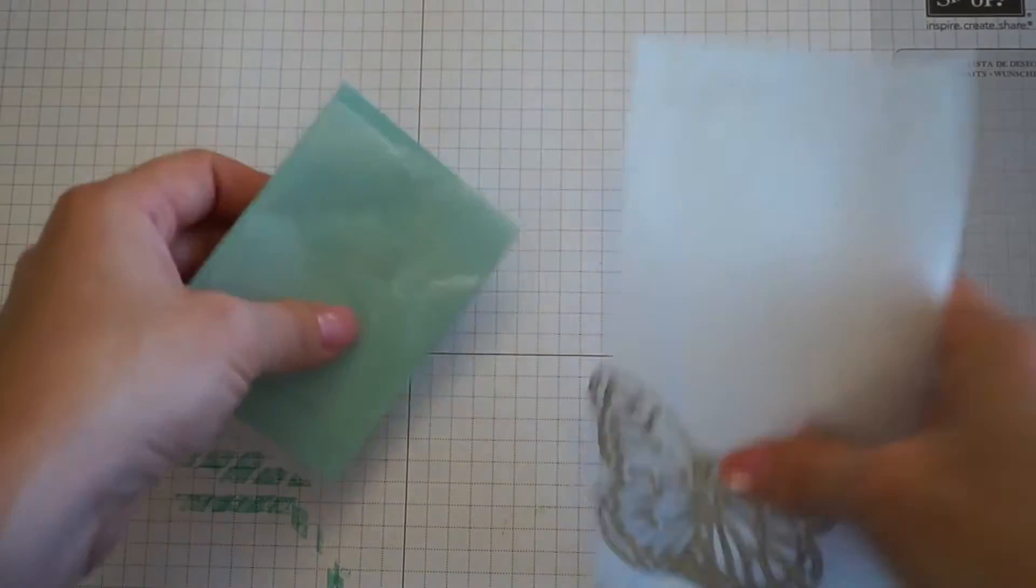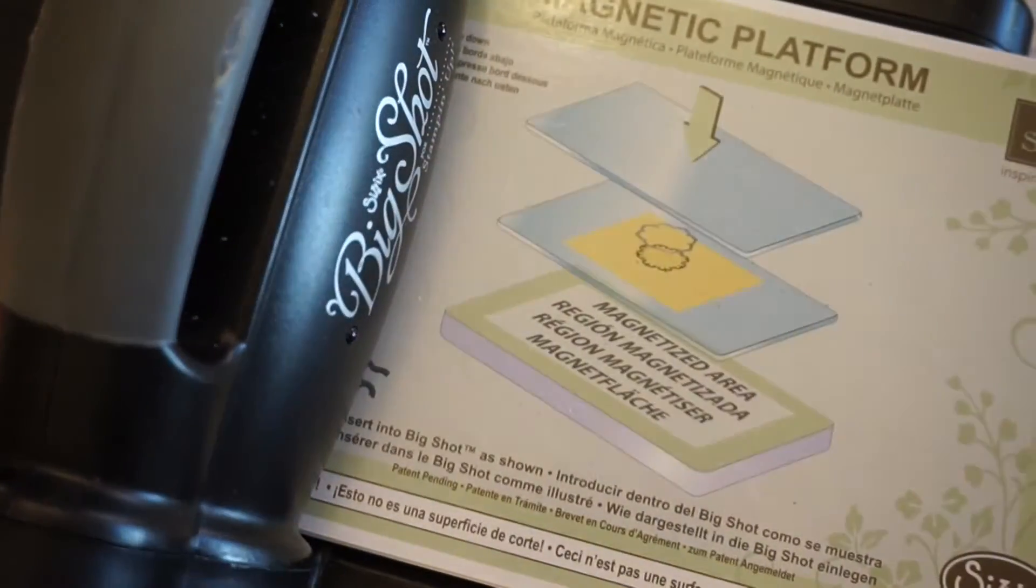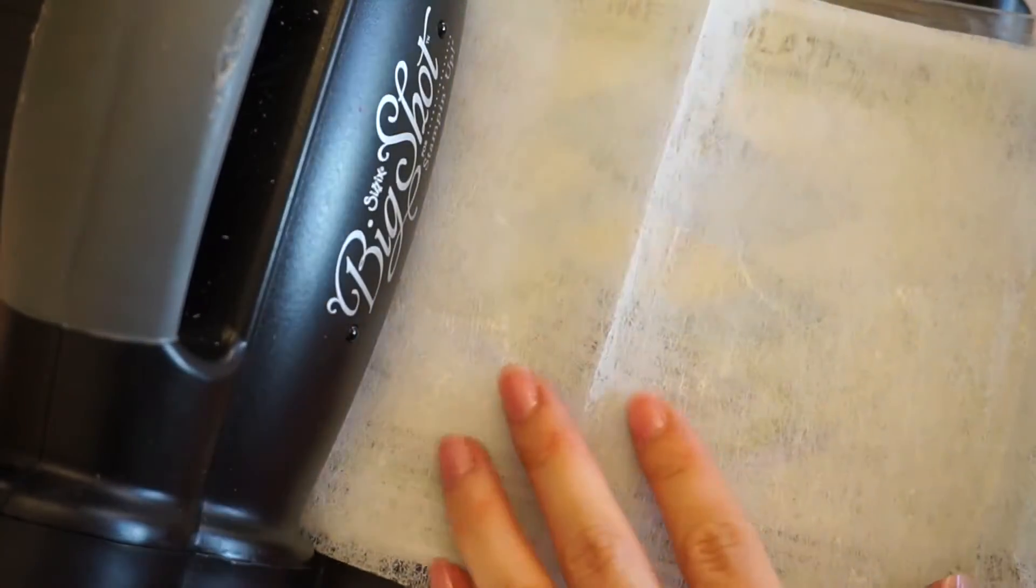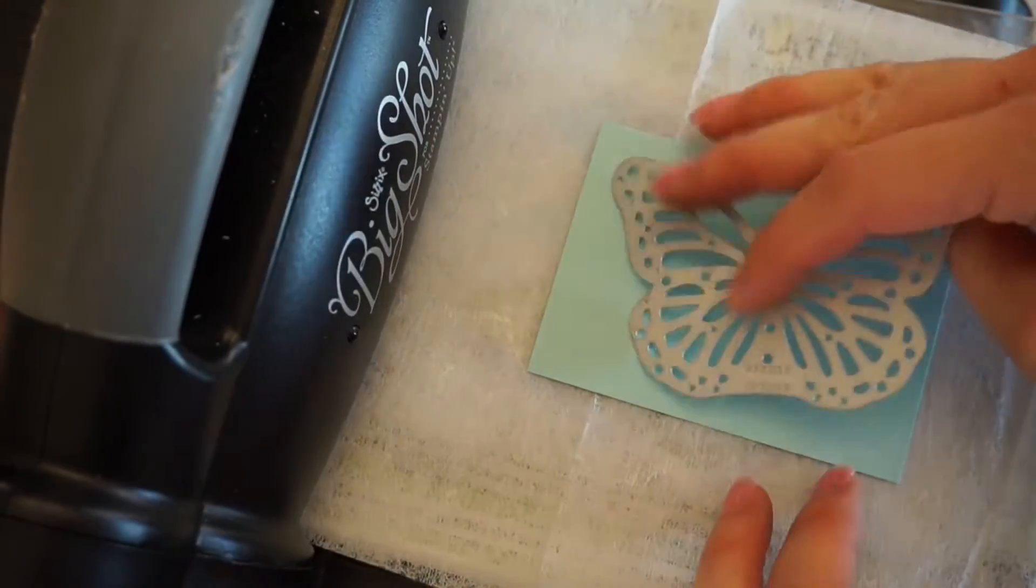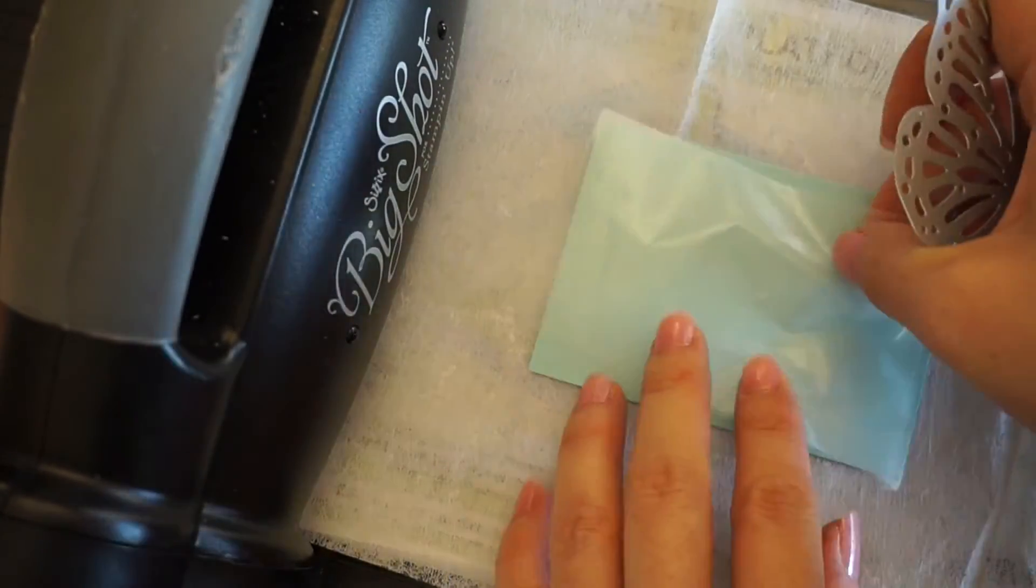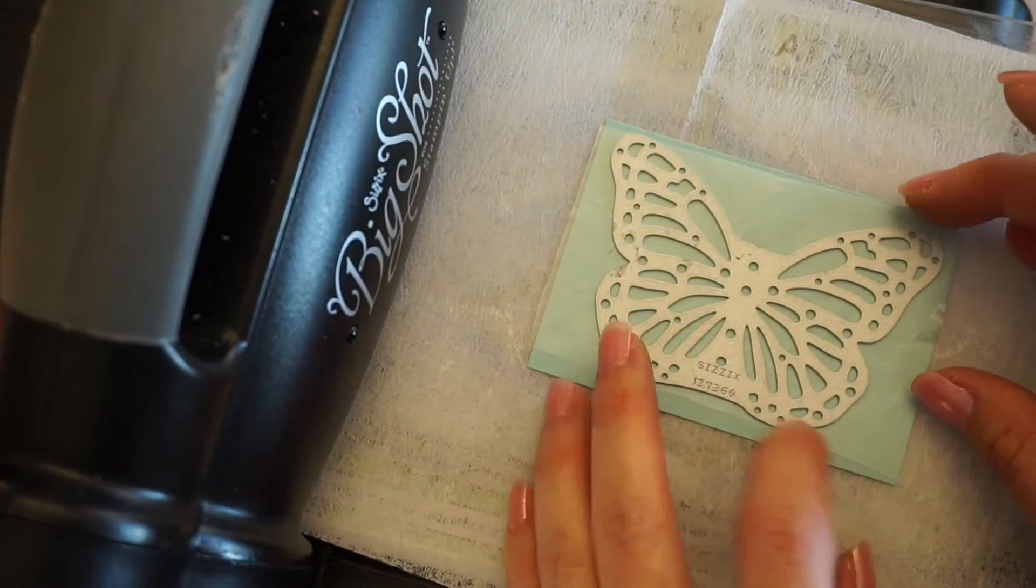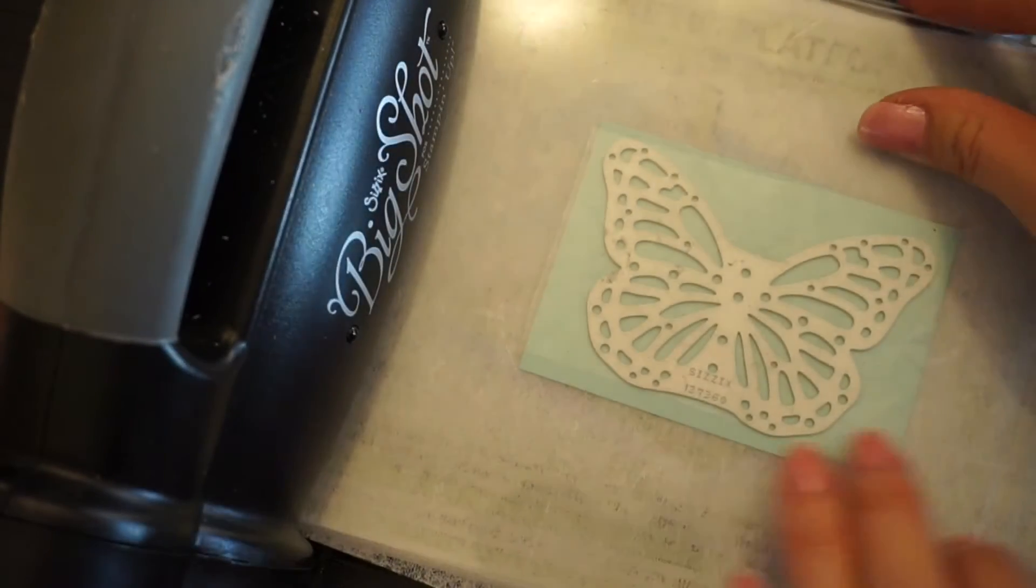I will get the big shot machine out. We use the magnetic platform, one cutting pad, a dryer sheet, your pool party cardstock. Now, before the thinlits, you want to put the wax paper in your thinlits. Another cutting pad and run it through.